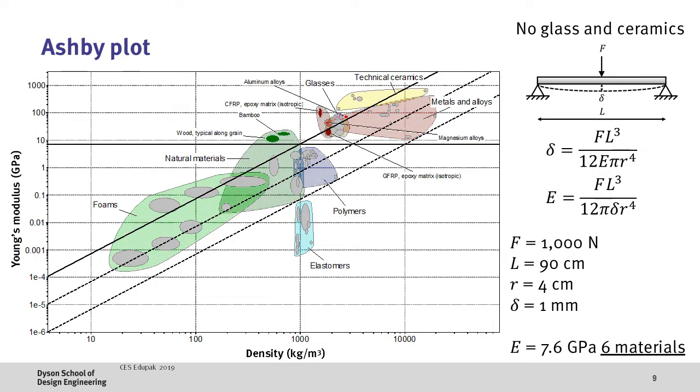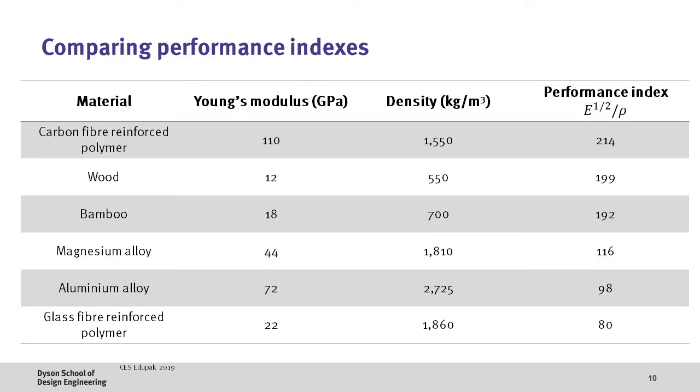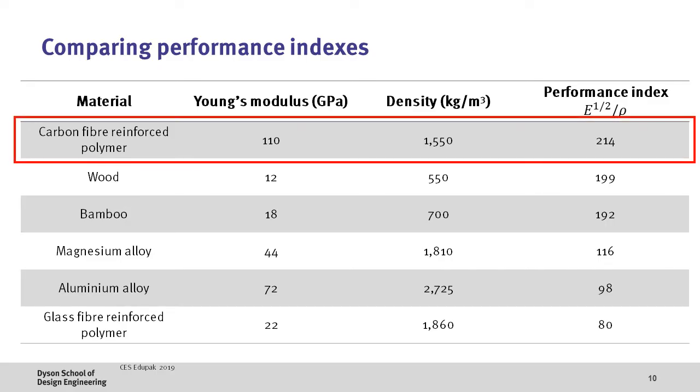Finally if we eliminate glasses and ceramics from our analysis we get to six remaining materials which is much more manageable to do an in-depth analysis. So if we now take our six remaining materials, their Young's modulus and their density, we can calculate their stiffness performance index and rank them. Here it can be seen that carbon fiber reinforced polymers rank the highest with natural materials such as wood and bamboo surprisingly following and ahead of materials such as magnesium and aluminum alloys as well as glass fiber reinforced polymers. This is already really useful however it's not the whole picture.